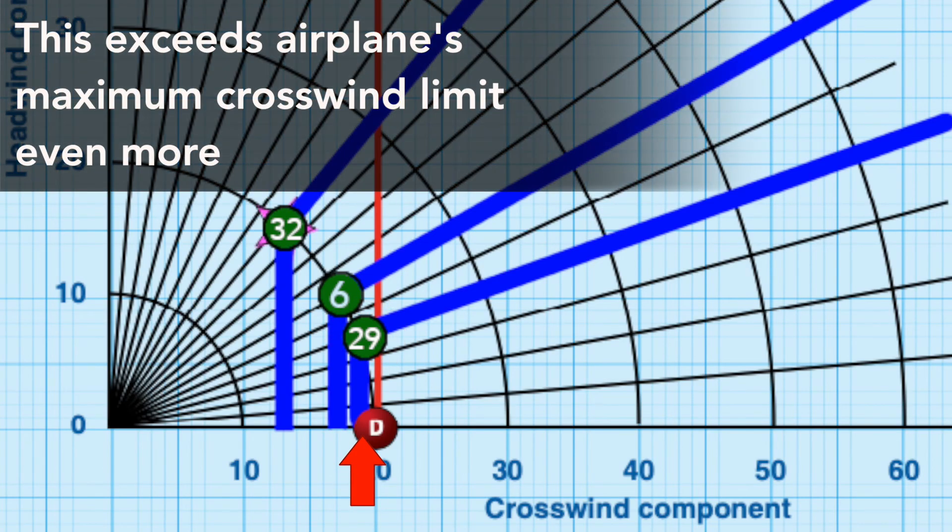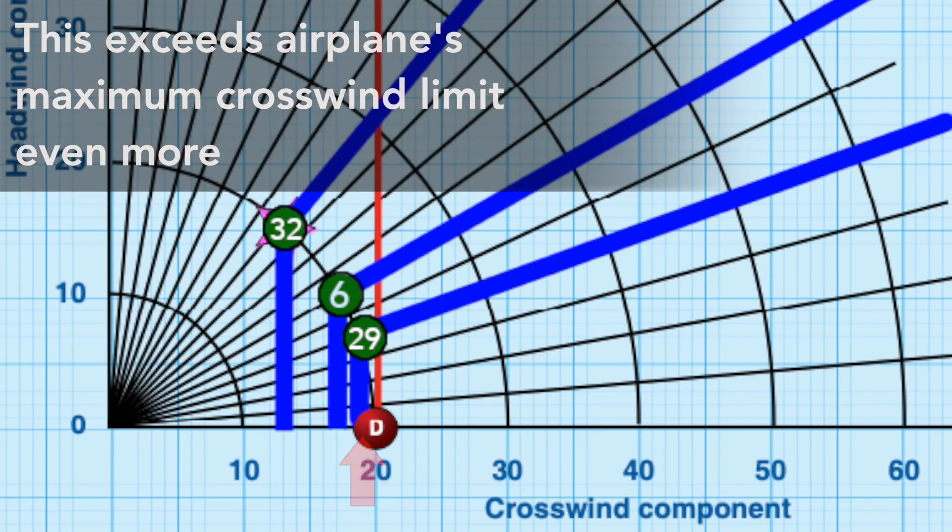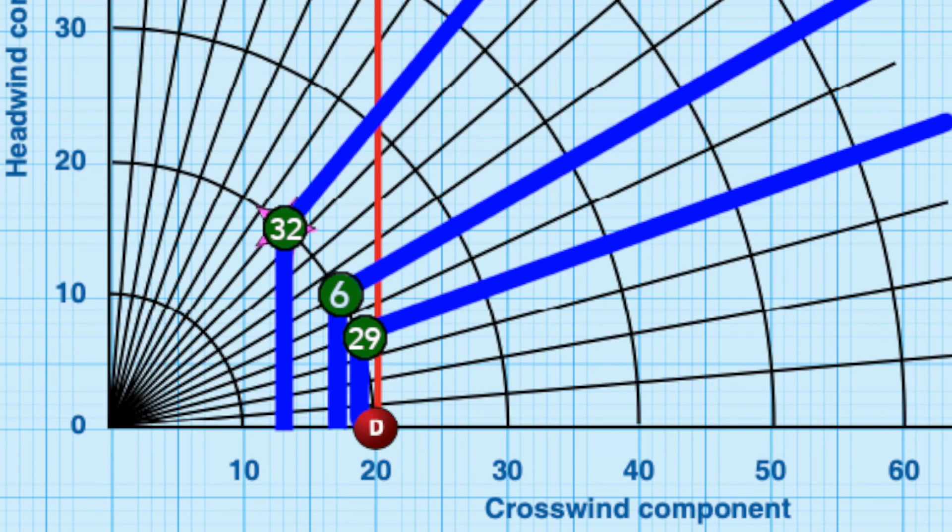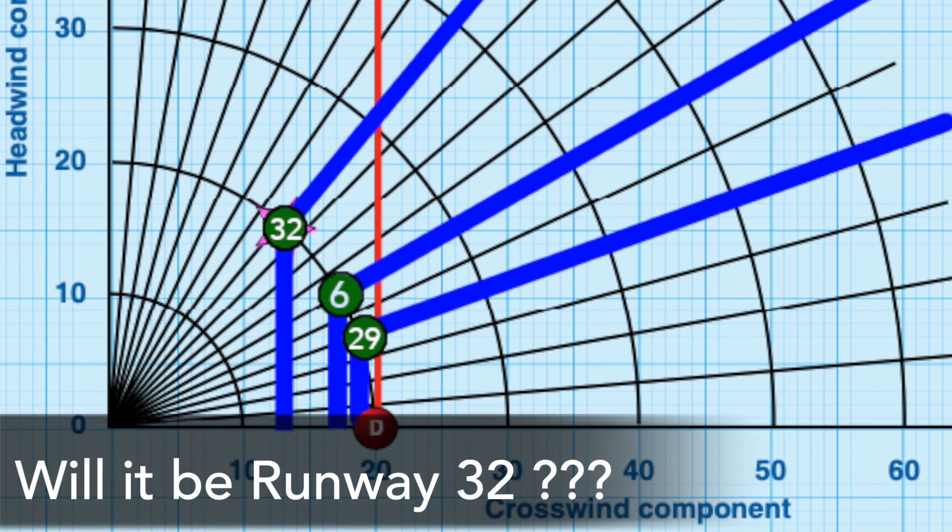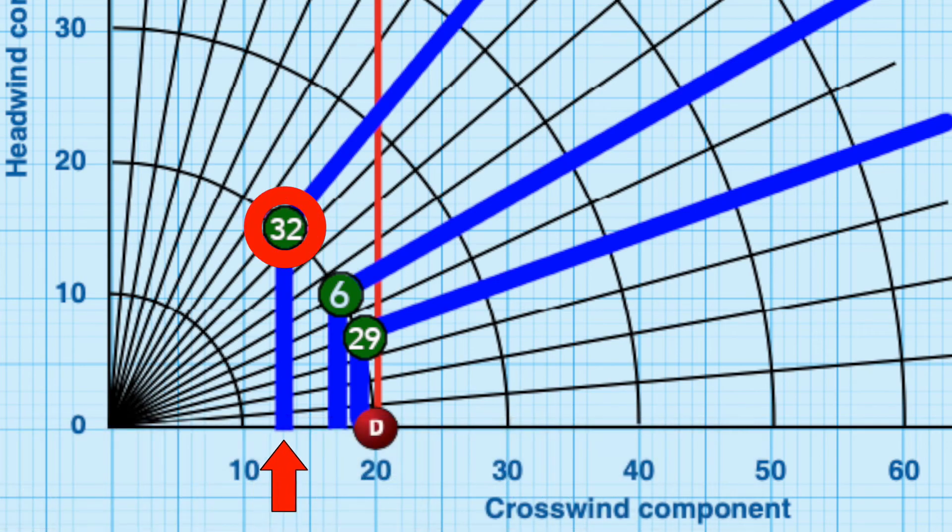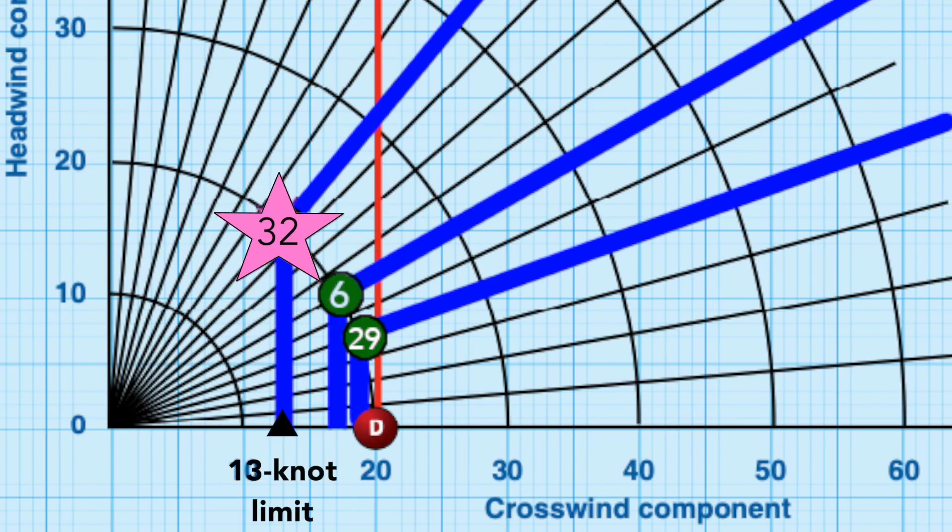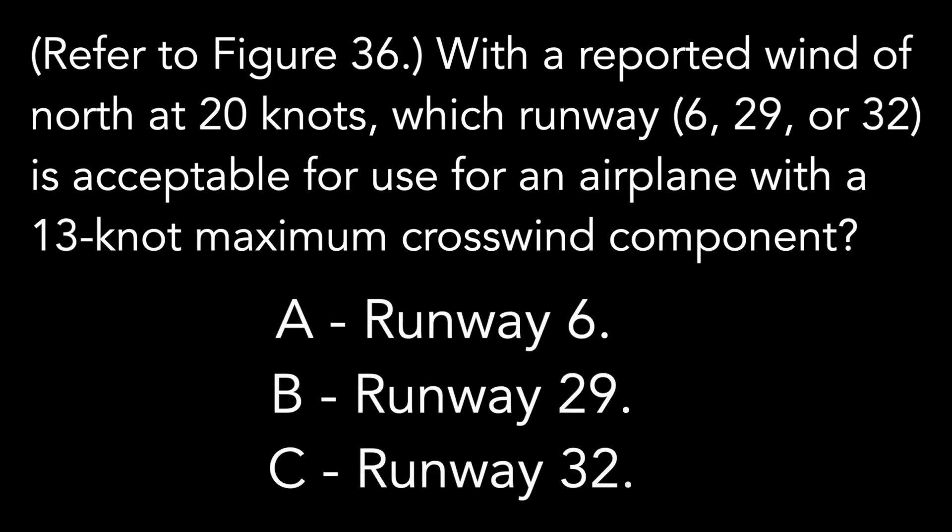Next runway, runway 29, puts us even farther away from 13 knots, even closer to 20 knots on the chart. So that one's not good either. At this point it looks like the airplane is down to the last provided runway. Runway 32 will place us on this spot on the chart, lining up with the limit of the airplane. Thank goodness. So runway 32 would be the best answer within our given options.